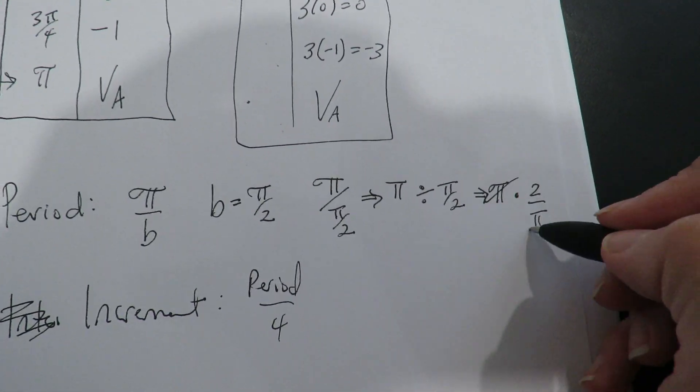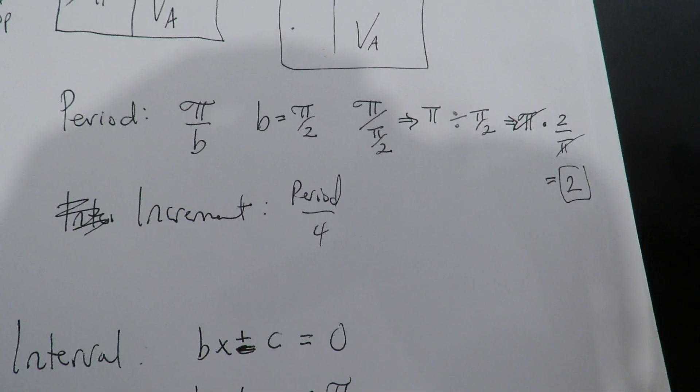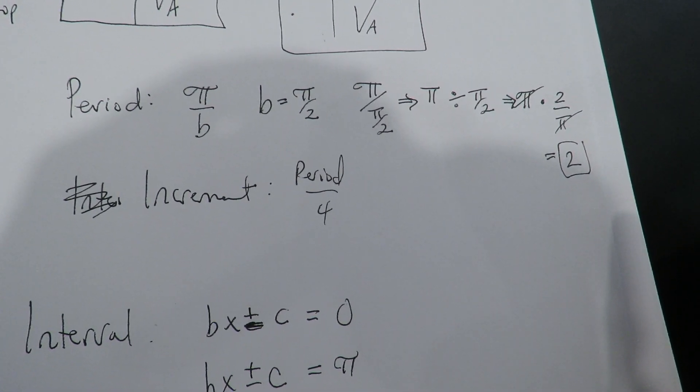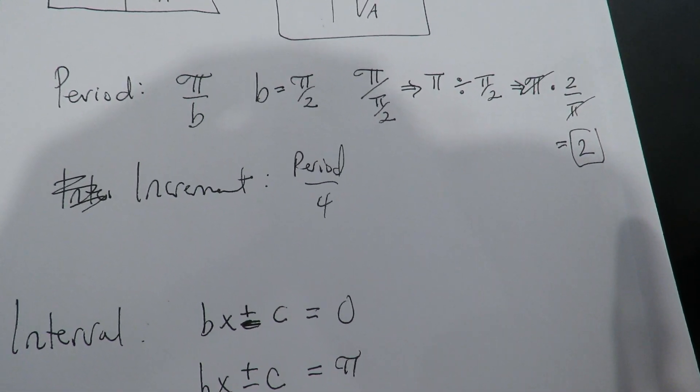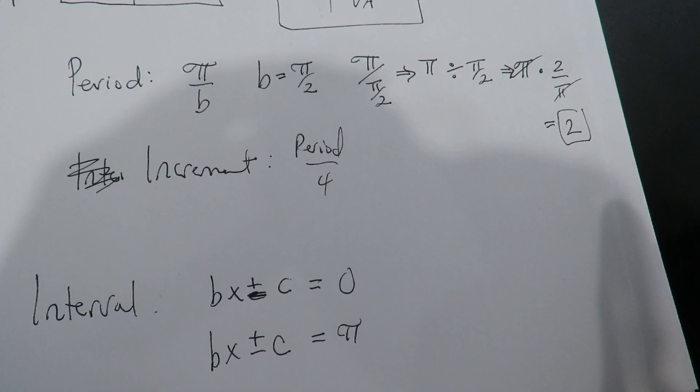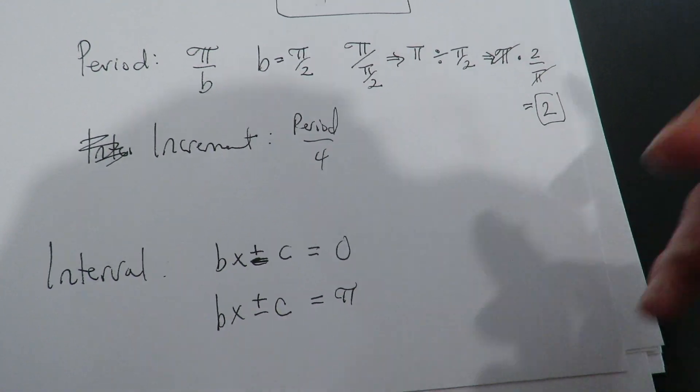And now the pi's cancel and the final answer here is 2. So the period or the width is 2 units. That sometimes freaks people out because they feel like, oh, you've got to have a pi. No, you don't. You can have just a plain value. You don't have to have a decimal value.